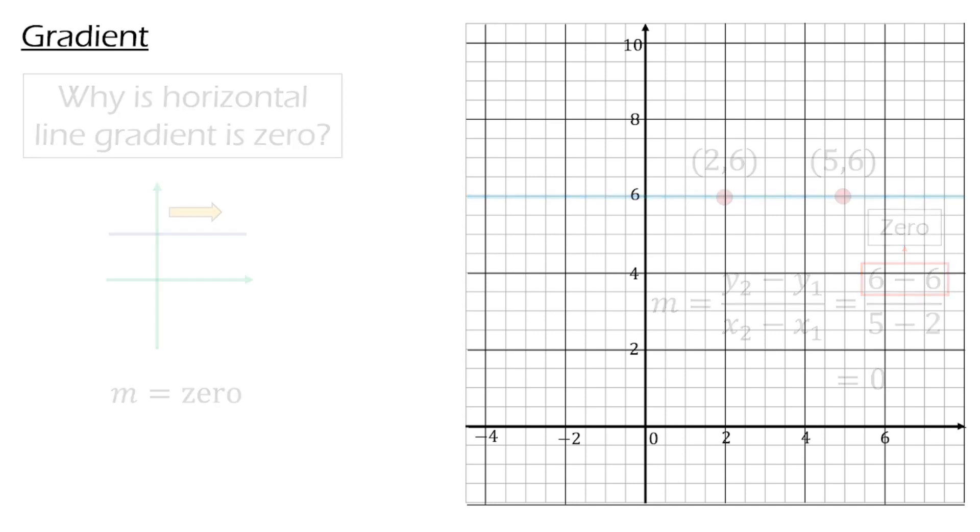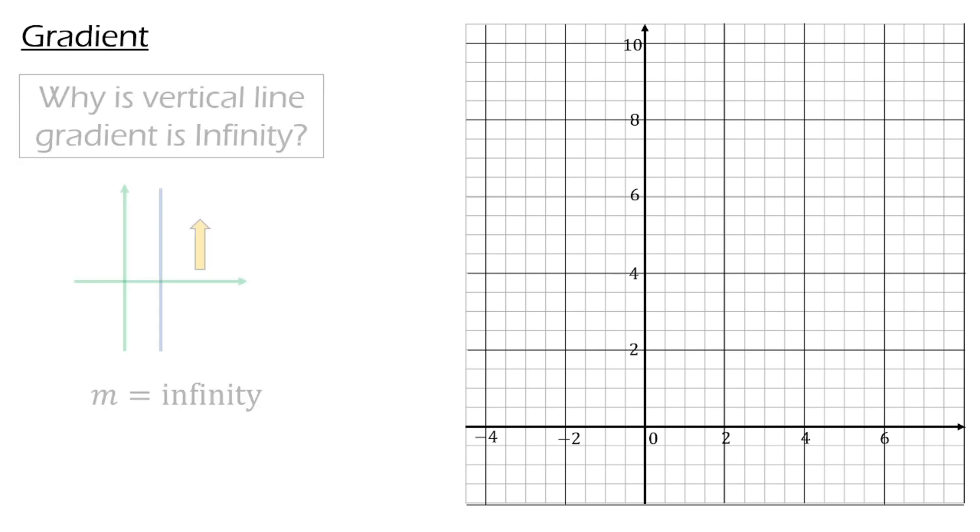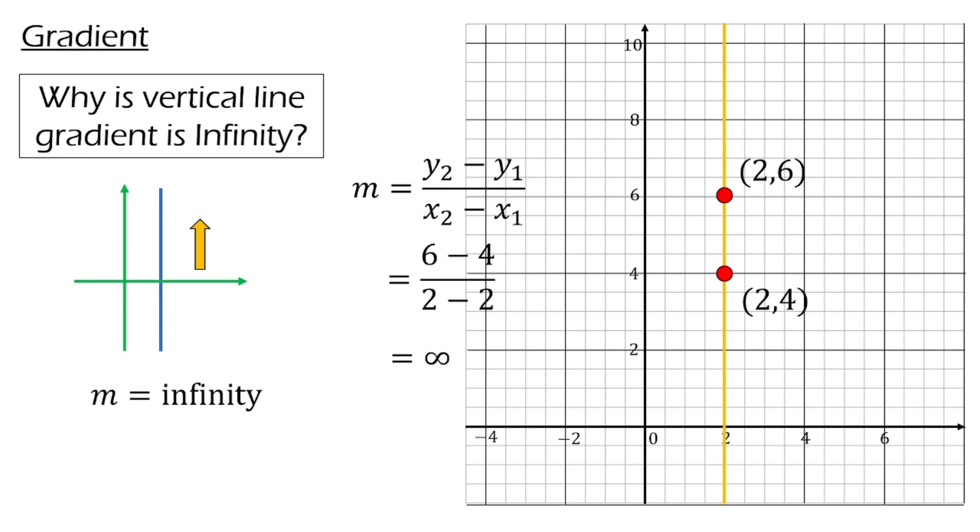On the other hand, why do vertical line have infinity gradient? Let's do the same. I pick 2 coordinates. Again, substitute them inside the gradient formula. You can observe that the denominator x2 minus x1 is equal to 0.